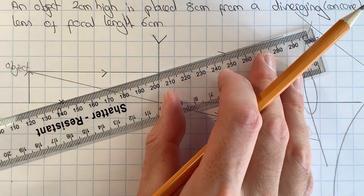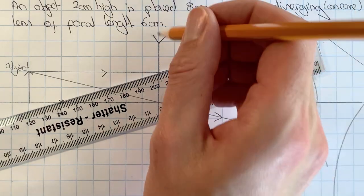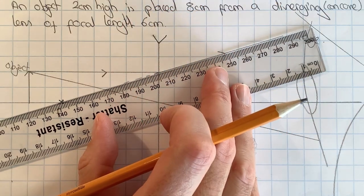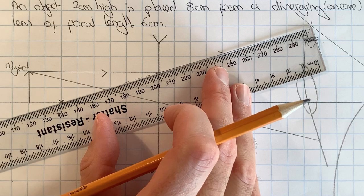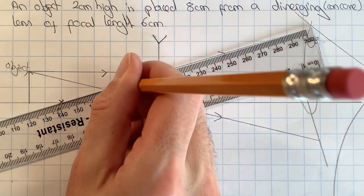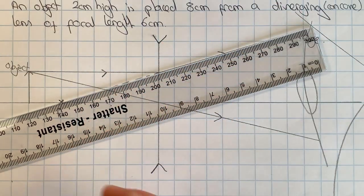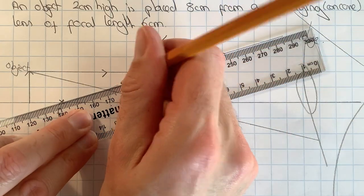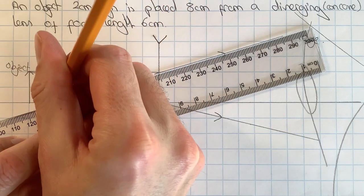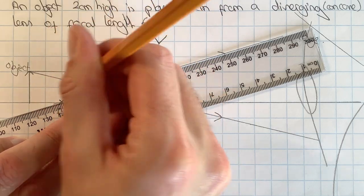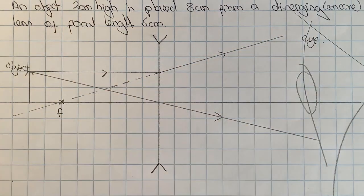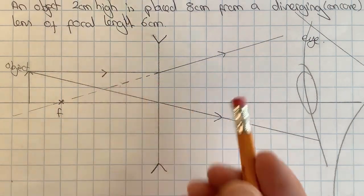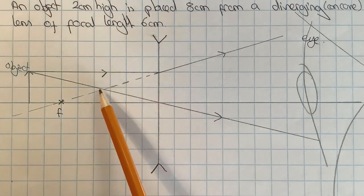So if we line up the ruler with this ray here and then add in a dotted or dashed virtual ray going back this way - there we go, finally managed that - and now we can see that this virtual ray crosses this real ray.